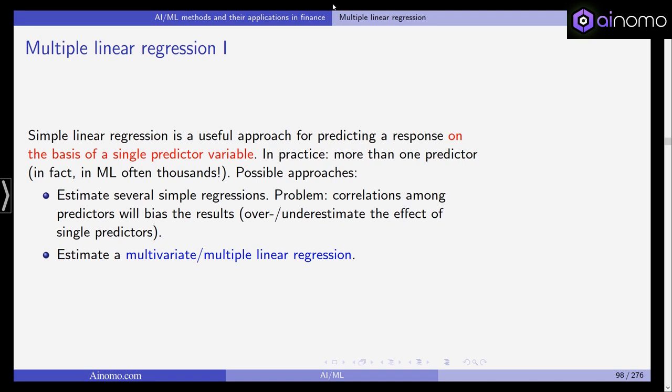Two possible approaches come to mind. The first one is estimate several simple regressions. For example, if you have 10 predictors, estimate 10 simple linear regressions. The problem is if you have correlations between those predictors, these correlations will bias the results. The coefficients on one predictor will be biased upward or downward, over or under estimation of the effect of one single predictor. The second alternative is much better: estimating a multivariate or multiple linear regression.